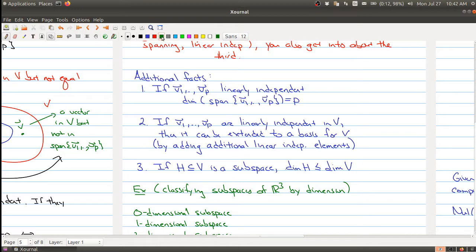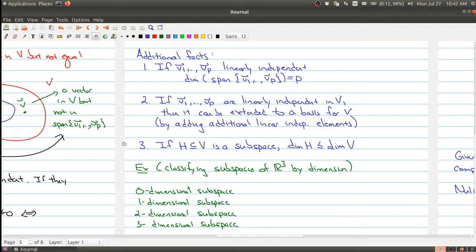And the following kind of examples hopefully will help clarify some of these things. The first thing I thought I would do is think about R³ and you can classify subspaces by dimension. So for example, the zero dimensional subspace, well there's only one, and that one is the origin. That's the only zero dimensional subspace in R³.